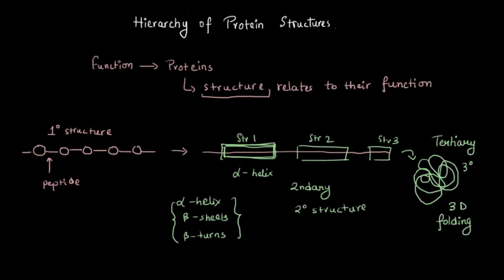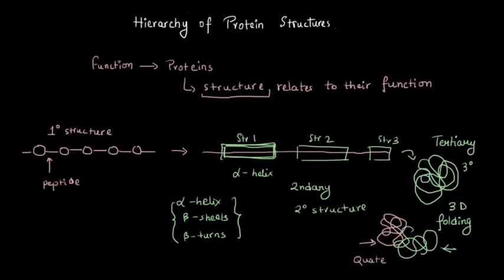Beyond primary, secondary, and tertiary structure, we have another level: when different polypeptide chains come together and form a specific structure, we call that the quaternary structure. For example, hemoglobin has two alpha chains — alpha 1 and alpha 2 — and two beta chains — beta 1 and beta 2. The alpha chains are tertiary structures in themselves, and when they come together along with the tertiary structures of the beta chains and associate with one another, we call that the quaternary structure.